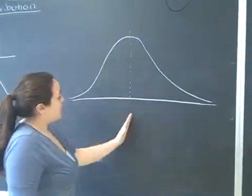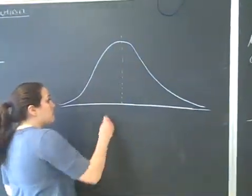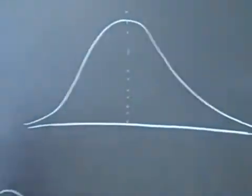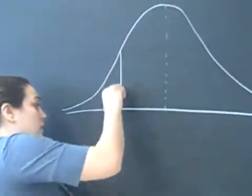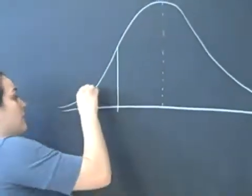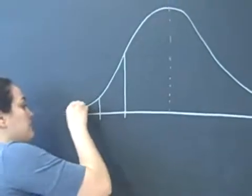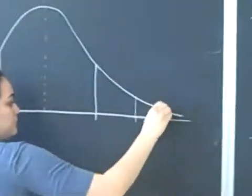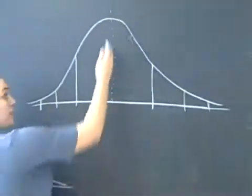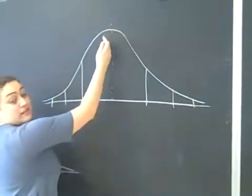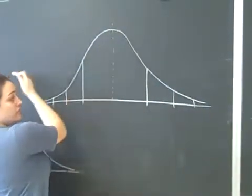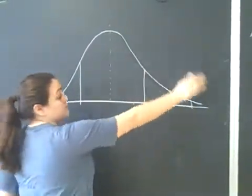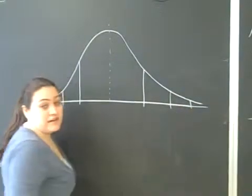To set it up, we put the mean in the middle, and there are three standard deviations, so we put three lines on either side. If we cut it in half, because it's symmetrical, this is 50% of the data on one side, and 50% of the data on the other side.